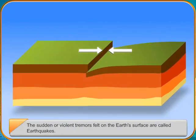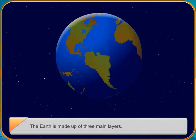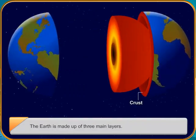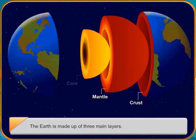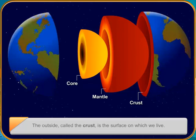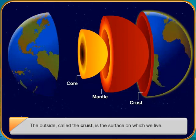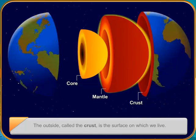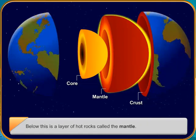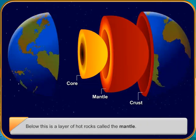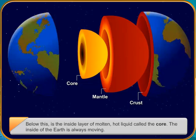The inside of the Earth is always moving. When we throw a stone into a pond, ripples of water travel outward from the center where the stone is thrown. Similarly, when the Earth's plates move and readjust due to the excessive heat in the Earth's interior, it sends out shock waves all around. This causes earthquakes.